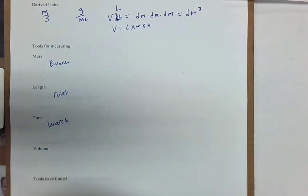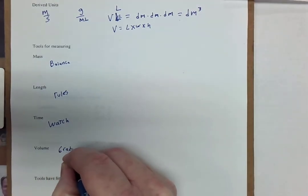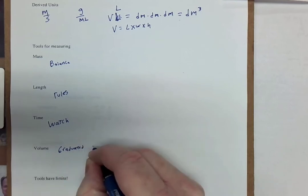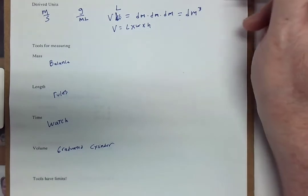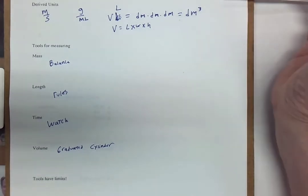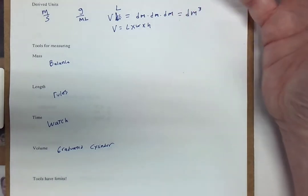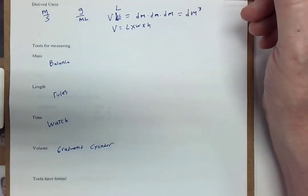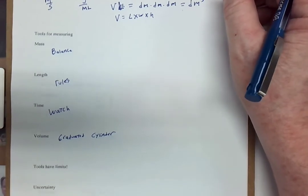Volume, we have a lot of options. Most of the time, we use the graduated cylinder. We do not use beakers to measure volume. Those beakers are good for holding liquid. They're not terribly good for much else.